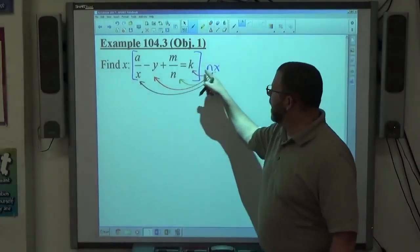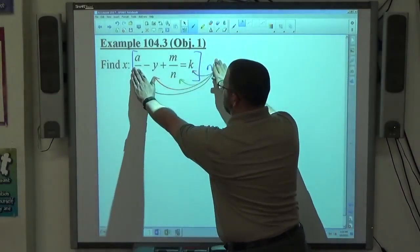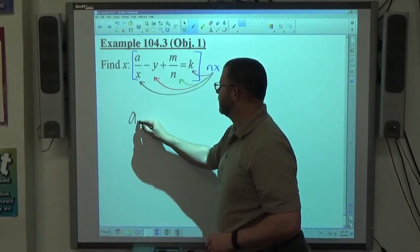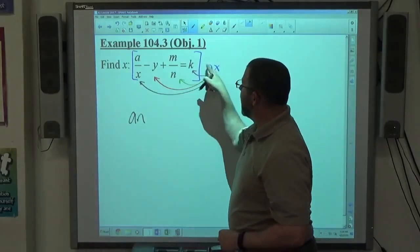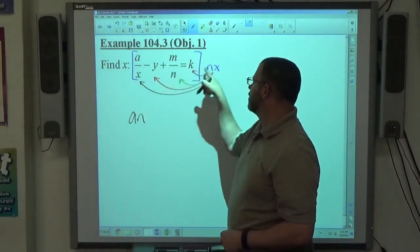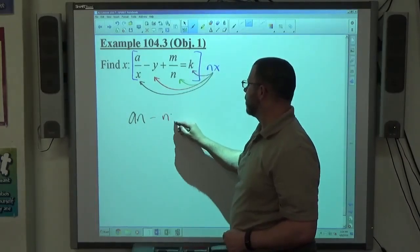So, when I do NX times A over X, X cancels X, leave me with A-N. When I do NX times negative Y, that's not a fraction, nothing cancels, so I get minus NXY.